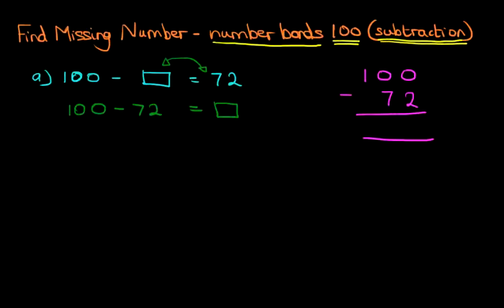We can label the columns. We've got units, tens, and hundreds. Now, this is actually a slightly longer way of doing this. But let's do this. Okay, units. We've got 0 minus 2. Well, we can't do that because 0 is smaller than 2.